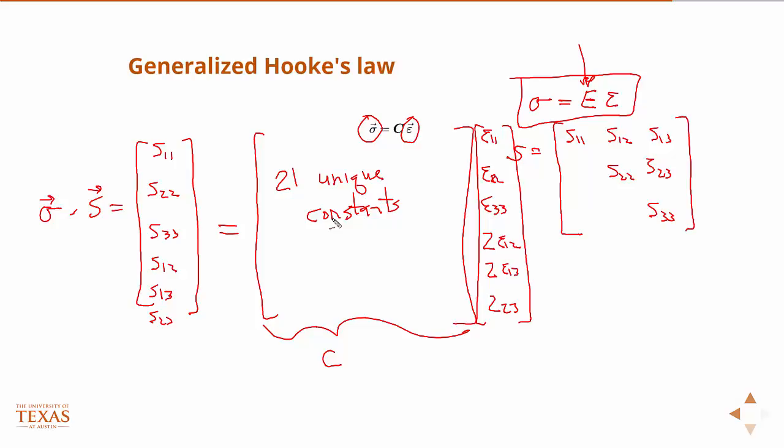It's very rare that a material doesn't have any planes of symmetry whatsoever. And so it turns out, if the material has an infinite number of planes of symmetry, we can reduce it all the way down to two constants.